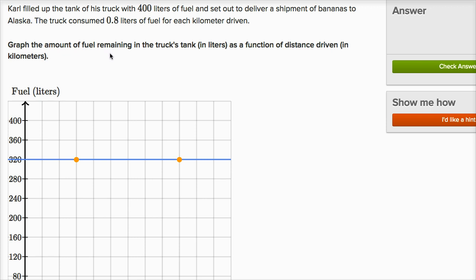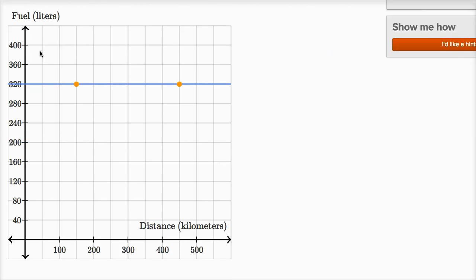Graph the amount of fuel remaining in the truck's tank in liters as a function of distance driven in kilometers. Right over here, we have a graph where our horizontal coordinate is distance in kilometers, and our vertical axis is fuel in liters.